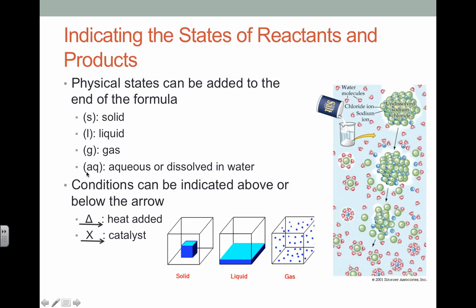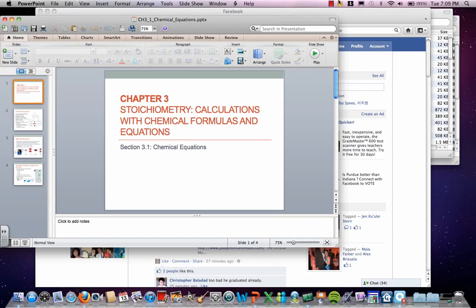In addition to putting symbols next to the compounds, we can also indicate conditions by manipulating the arrow. Sometimes you may see a delta above the arrow. That means you're adding heat to get the reaction to go forward. Sometimes you may see an element or compound above the arrow. That indicates a catalyst that's necessary to drive the reaction. Catalysts, like biological enzymes, speed up the rate of the reaction but are not consumed as part of the process. I believe that's it. I will see you soon.